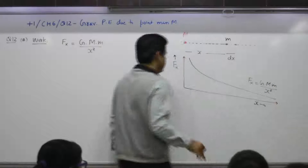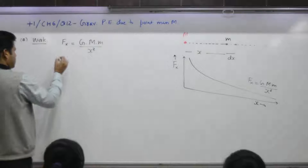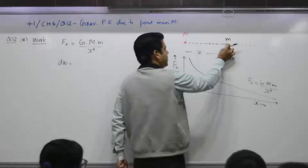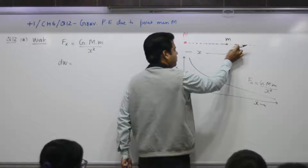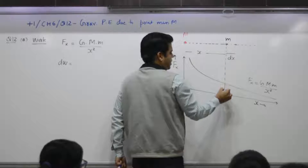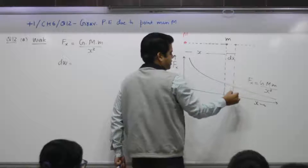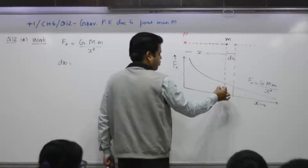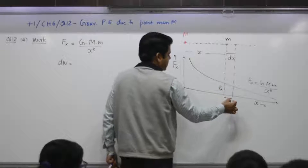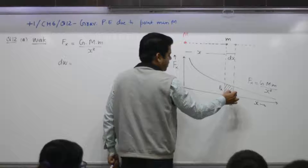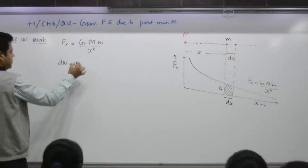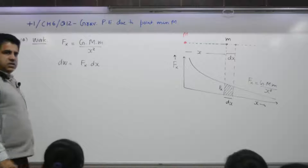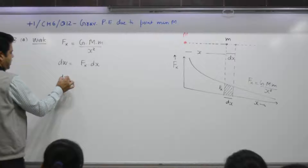If you move object small m from x to x plus delta x, you do a small amount of work. On the graph, work done is the area under the F-x graph. This small area represents the small amount of work done, which is F(x) dx.